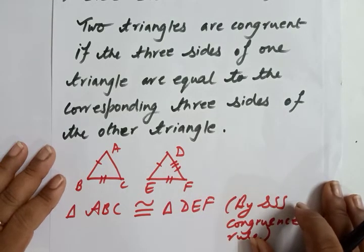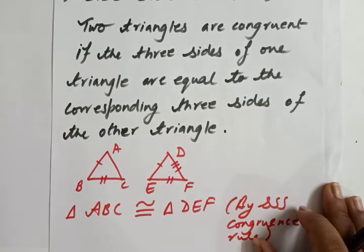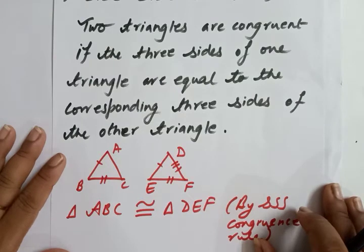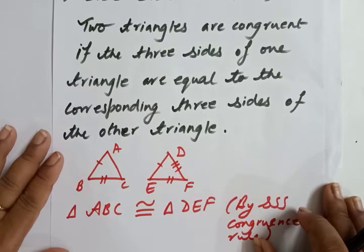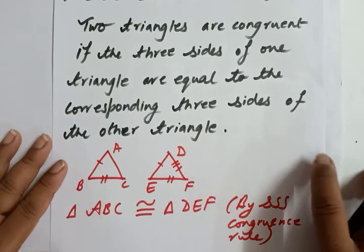So we have gone through all the five congruency criteria. In my next video, I will take a few examples from the NCERT textbook for the chapter Triangles and we will understand how we can prove that given triangles are congruent to each other. Thank you, students.